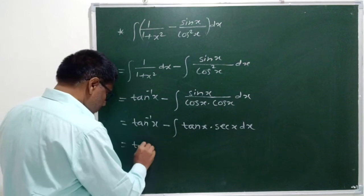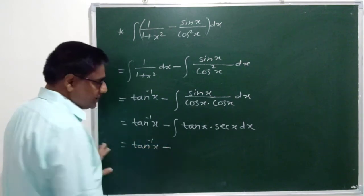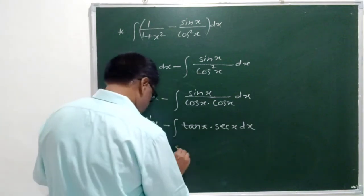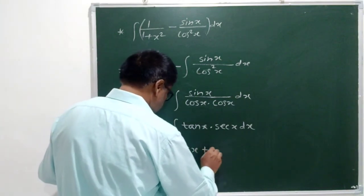Therefore, this is equal to tan inverse x minus integration of sec x, tan x is sec x. Sec x square c.